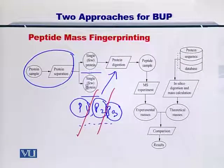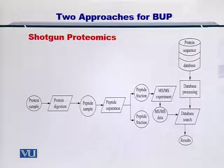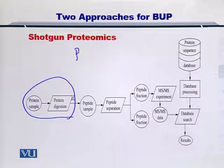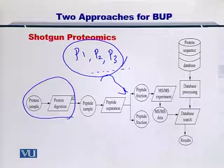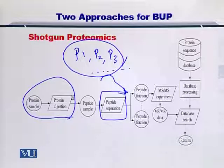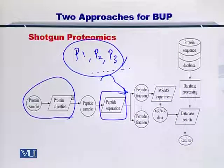Different to the peptide mass fingerprinting approach, in the shotgun proteomics approach, what you do is take the entire protein mix and instead of separating the mixture into individual proteins, you insert all of these proteins directly into the enzymatic digestion process. Once the proteins are digested into peptides, you can separate these peptides using any method, for instance a gel or chromatography. So the key difference is that in shotgun proteomics, you take the entire protein mixture, digest it, and obtain the resultant peptides for onward separation and mass measurement using the mass spectrometer.